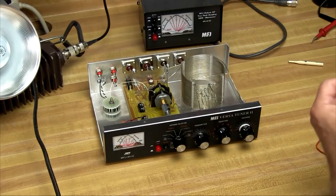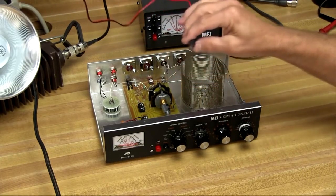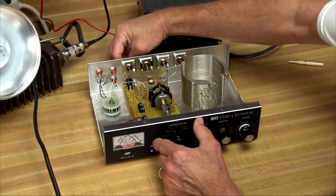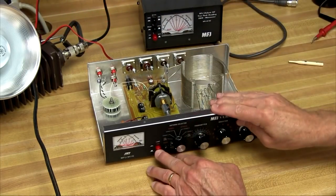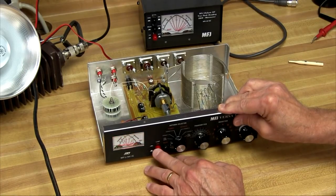The first test here is the meter lamp test. That's simple enough. We take the supplied cable here, hook it to 12 volts, plug it into the power connector on the rear of the unit, and be certain that the meter light does come on when we turn it on.